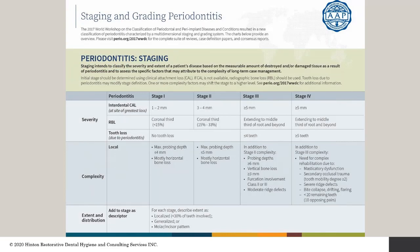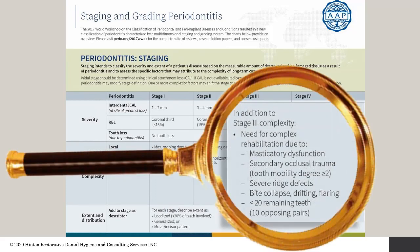We now have something that unifies us in terms of staging and grading periodontitis between Canada and the US — the new grading system, an update from the 1999 classification. This revised structure addresses the complexity of periodontal disease and the need to consider all facets of client health to assess, diagnose, communicate, and treat oral conditions more accurately. I've just started implementing it in my practice, and it's quite a transition after 20 years.